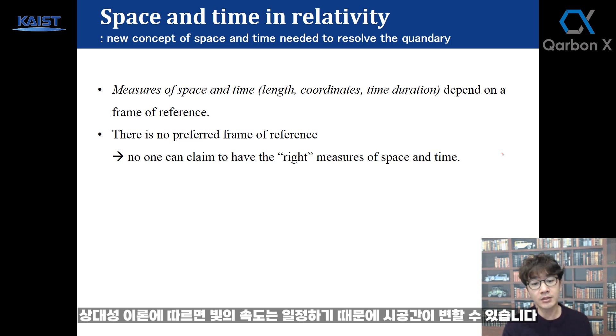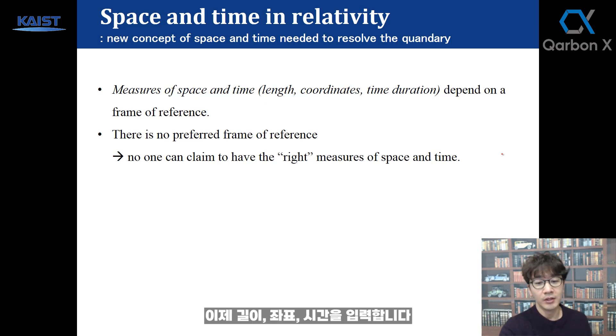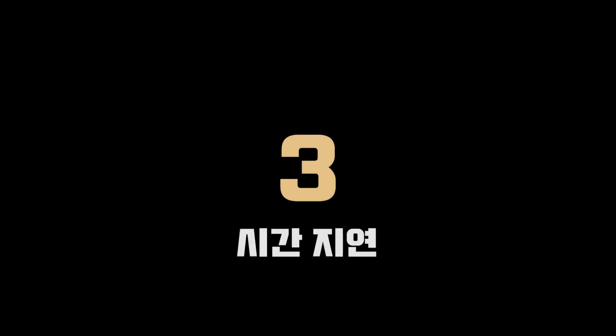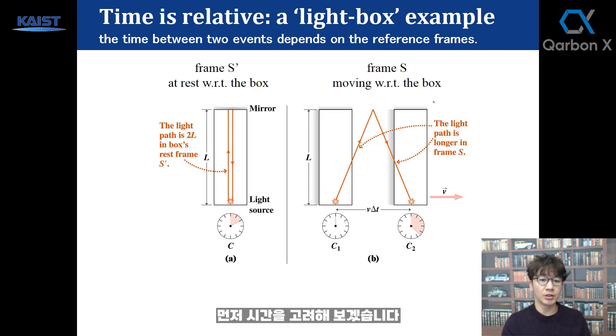Because the speed of light is constant, length, coordinate, and time are not constant anymore. For the speed of light to be constant, we explore this throughout this chapter. First, let's consider time in two different inertial reference frames.